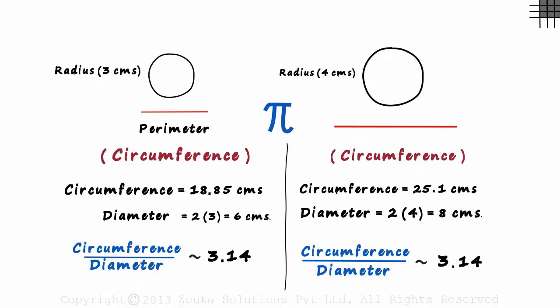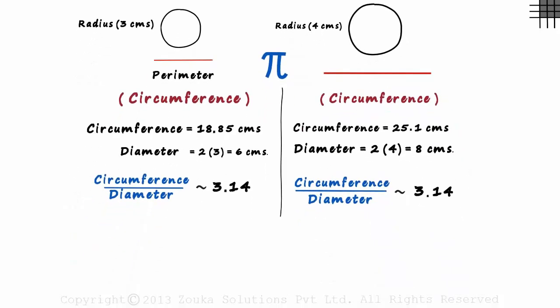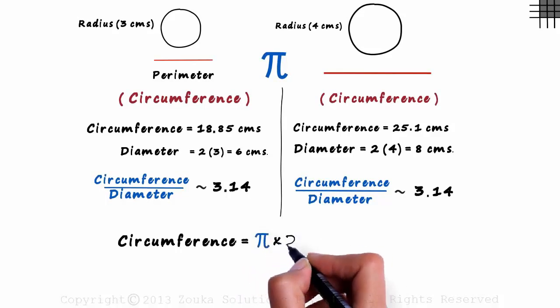Now let's zoom out and deduce a formula for the circumference. As the circumference by diameter equals pi, we can say that the circumference of a circle equals pi multiplied by the diameter.